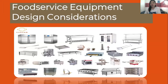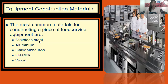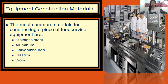Food service equipment design considerations — what are the considerations for equipment we are going to have? First is the mode of construction materials. The most common materials for constructing food service equipment are stainless steel, aluminum, carbonized iron, plastic, and wood. As you dine in different restaurants and hotels, observe the construction materials used in those hospitality facilities.